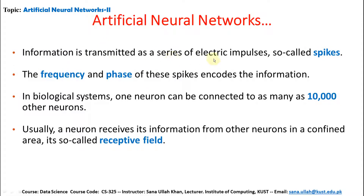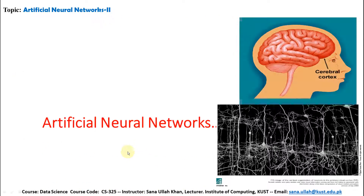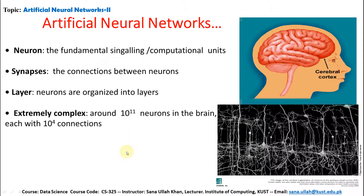Information is transmitted as a series of electric impulses, called spikes. The frequency and phase of each spike encode the information. In biological systems, one neuron can be connected to as many as 10,000 other neurons. A neuron receives its information from other neurons in a confined area, called its receptive field. The fundamental signaling unit is the neuron; the connection between neurons is called a synapse. Neurons are organized into layers. The brain contains around 10^11 neurons, each with 10^4 connections.